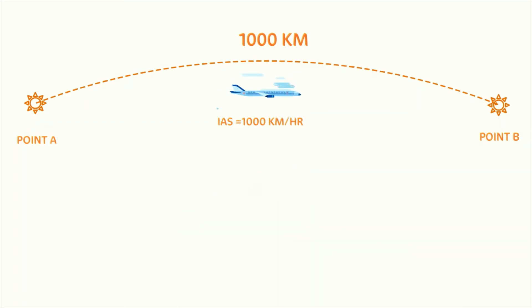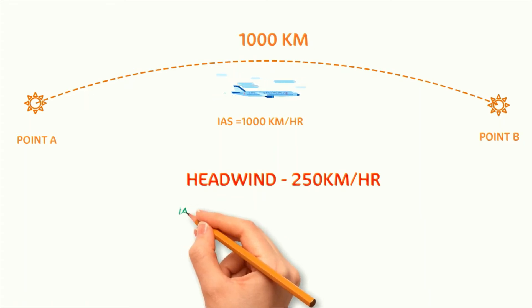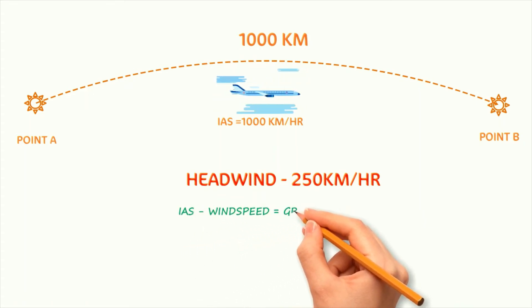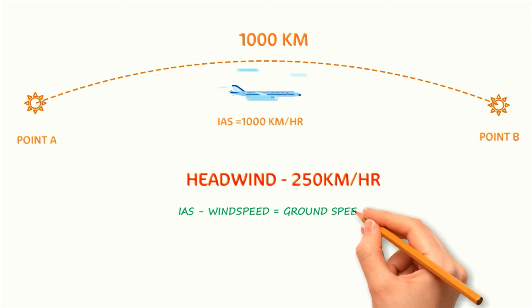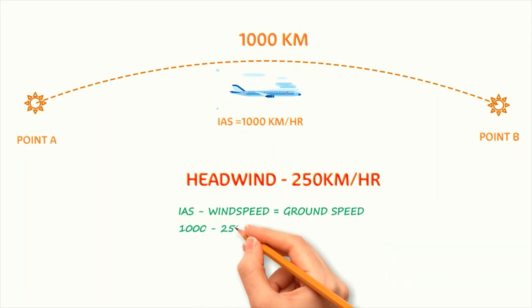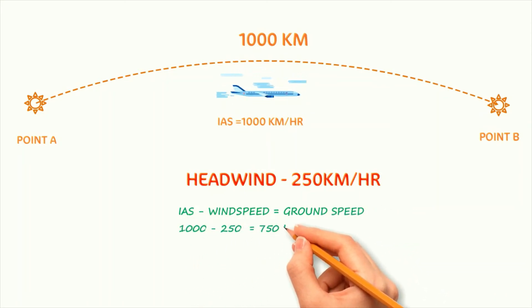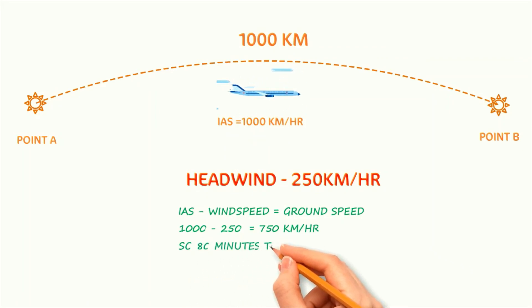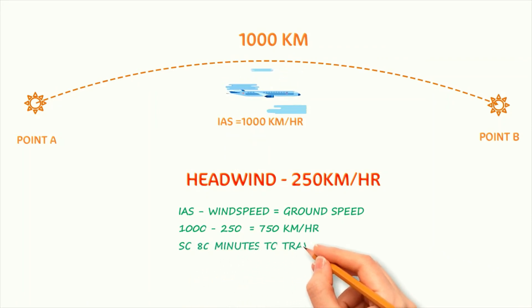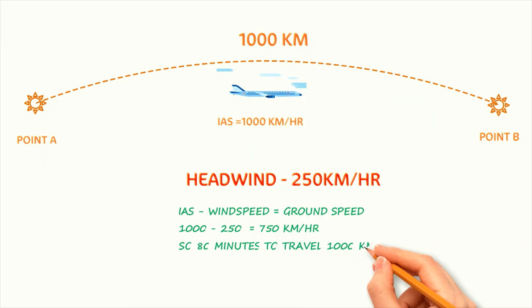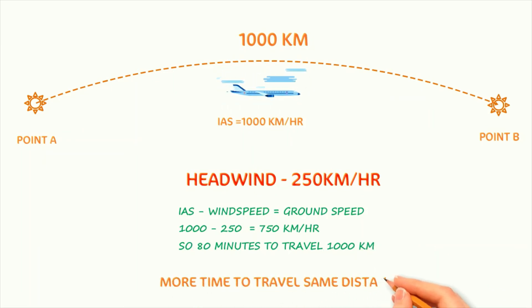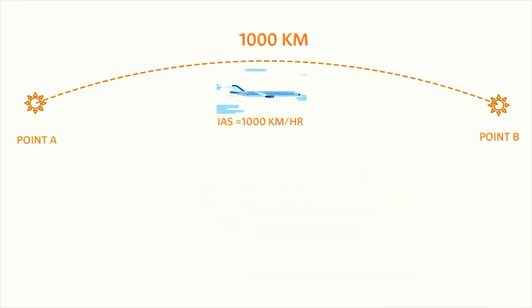Let us consider a headwind of 250 km per hour. The aircraft now has resistance from the wind, resulting in higher drag. So the effective speed of the aircraft becomes 750 km per hour, and as a result the aircraft takes nearly 80 minutes to cover the same distance. In essence, if there is headwind, the aircraft takes longer to cover the same distance.